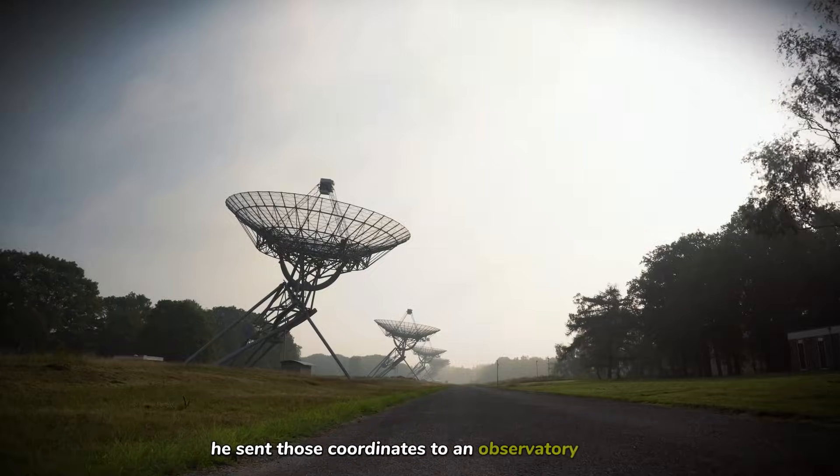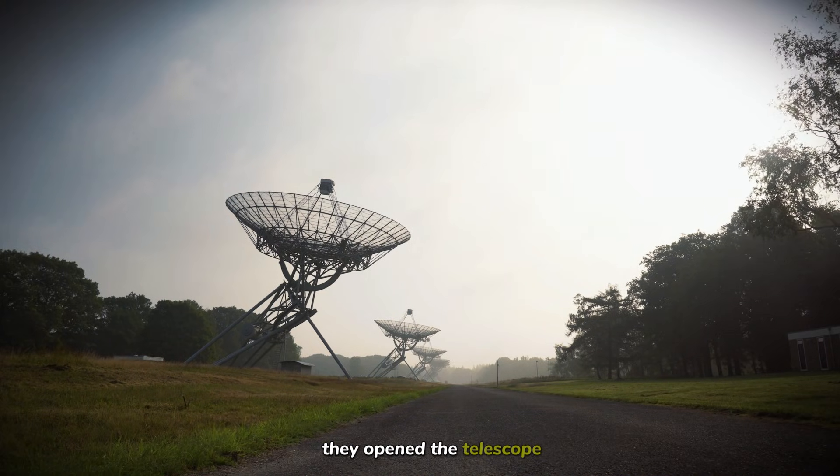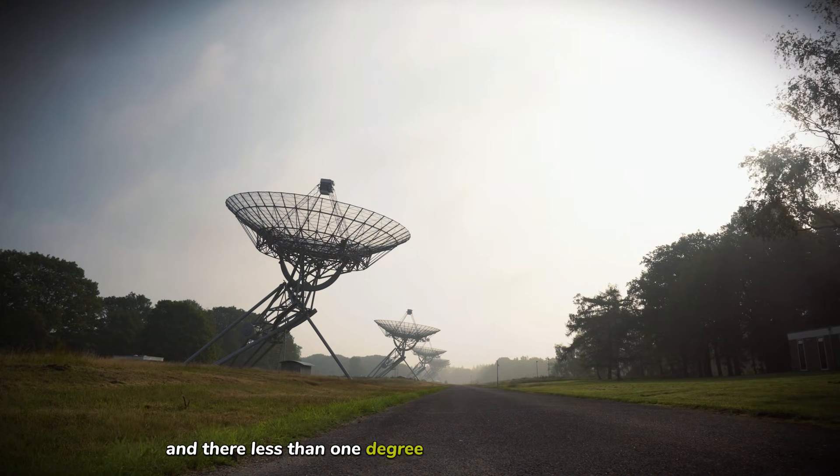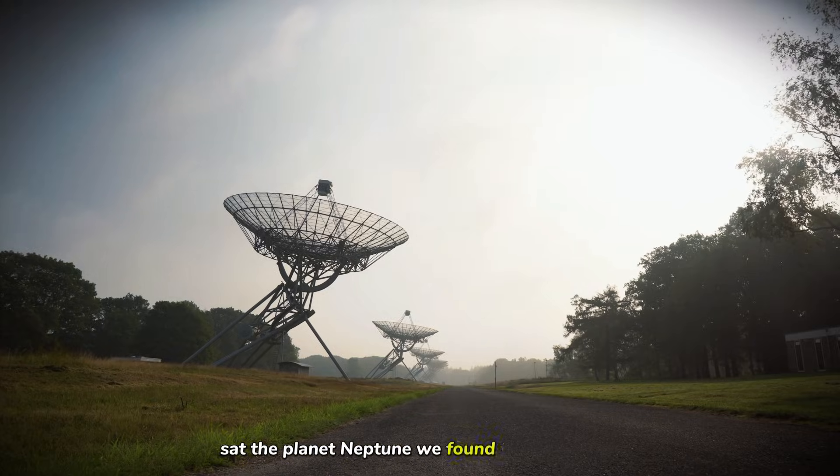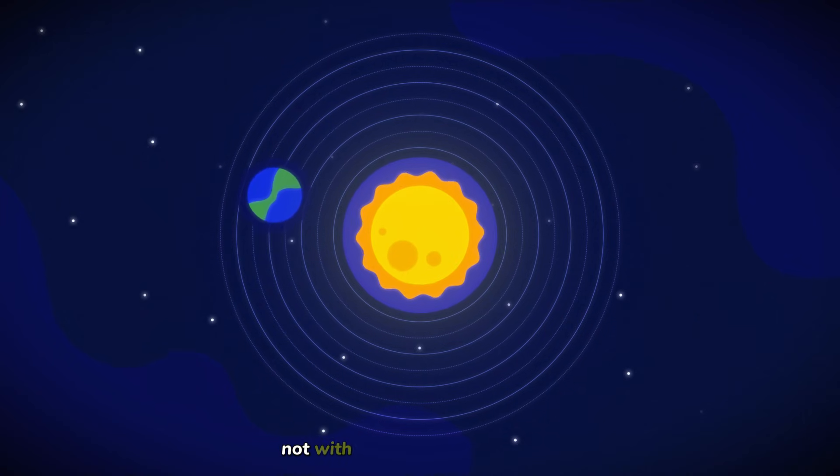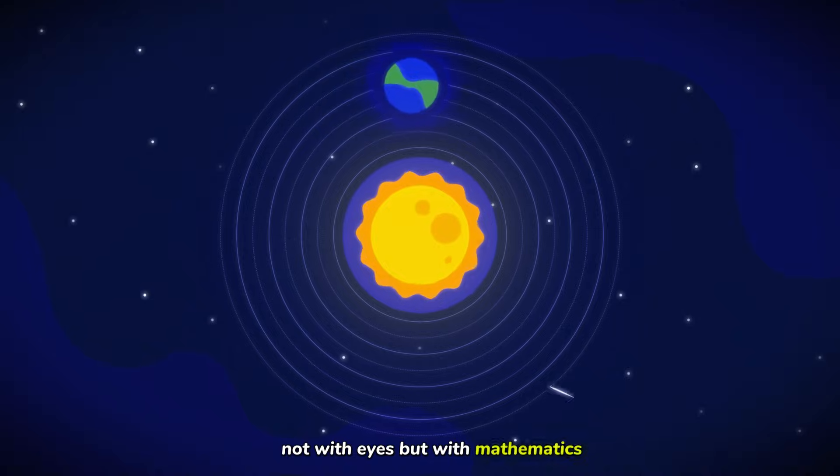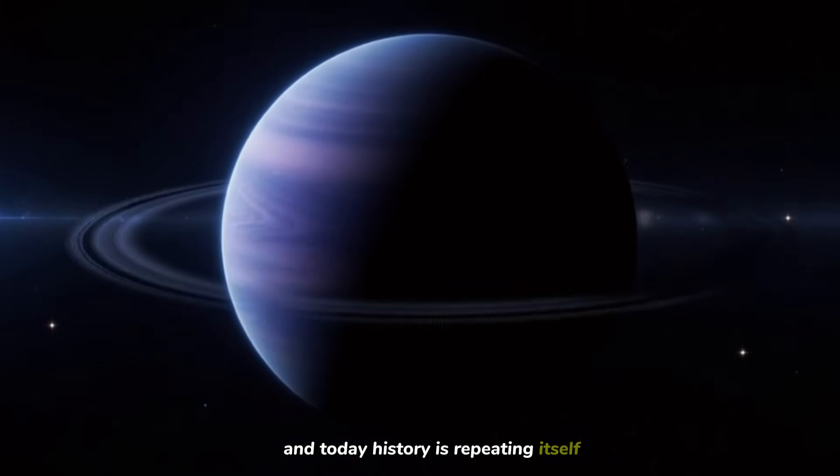He sent those coordinates to an observatory in Berlin. They opened the telescope, and there, less than one degree from where Le Verrier predicted, sat the planet Neptune. We found the eighth planet, not with eyes, but with mathematics. And today, history is repeating itself.